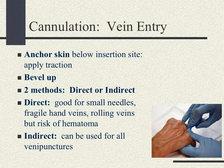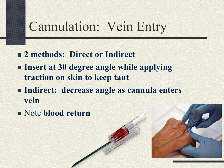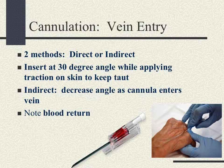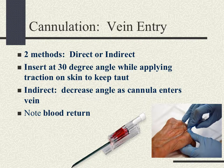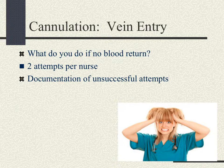When providing traction, make sure you're not pressing too hard because that can compress veins. Keep in mind you should have no more than two separate attempts. If unsuccessful at the second attempt, seek out someone else to try. Insert at a 30-degree angle while applying traction to keep the skin taut. With indirect method, decrease the angle as the cannula enters the vein and note blood return at that point. No blood return indicates you're not in the vein — you will need to restart. No more than two attempts per nurse, and documentation must happen for unsuccessful attempts.